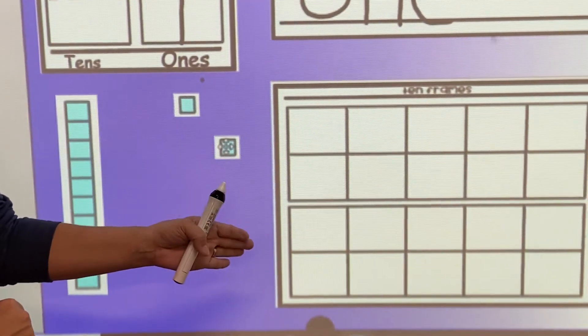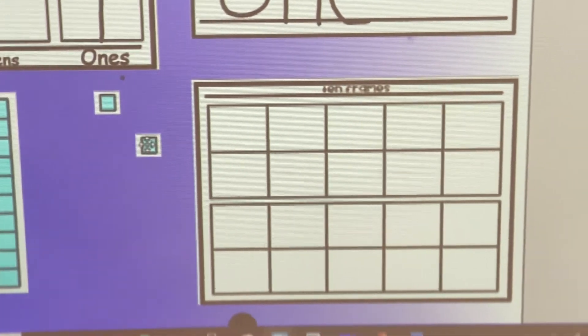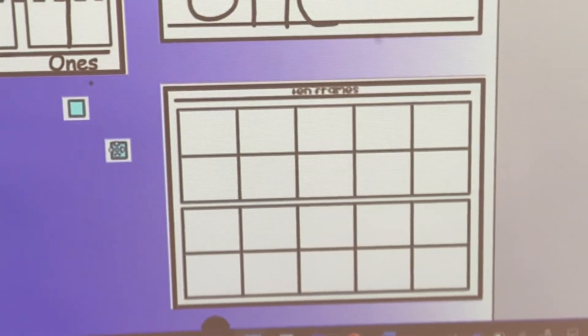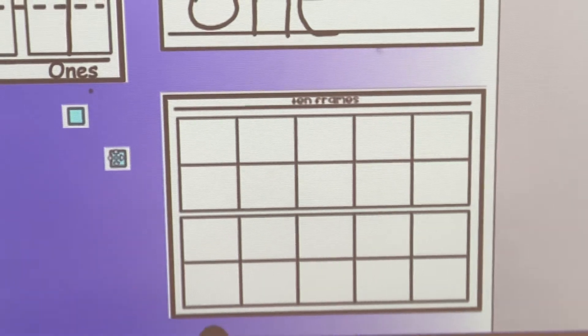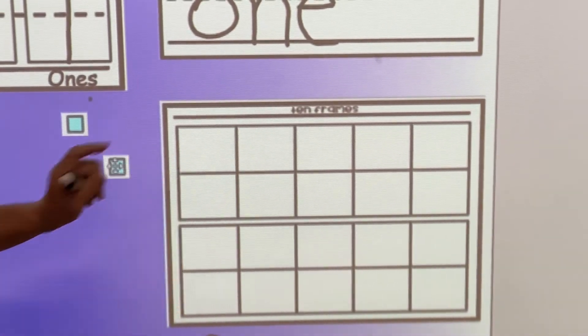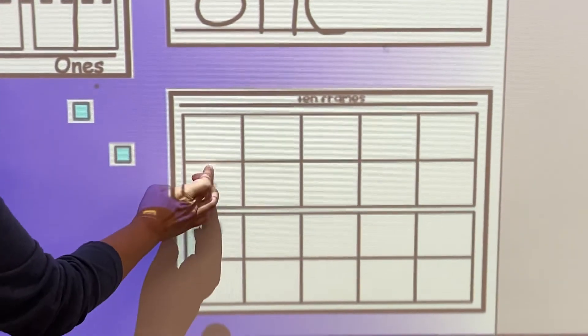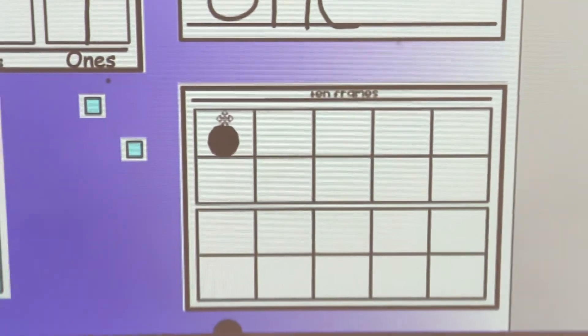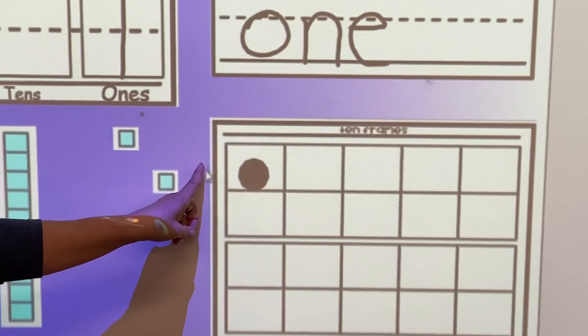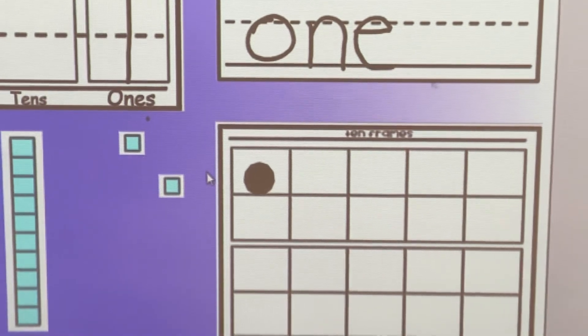And then I'm going to come to my ten-frame. And how many circles do you think I'm going to count out? One. That's right. One. And I'm going to put it in the first box. Here I go. One. There's one circle in my ten-frame.